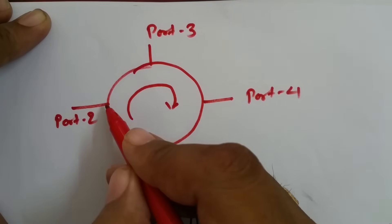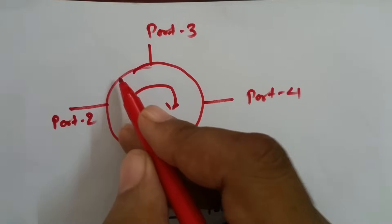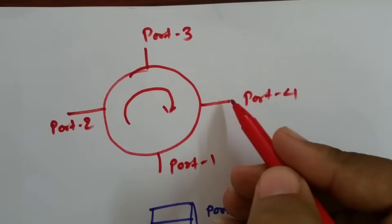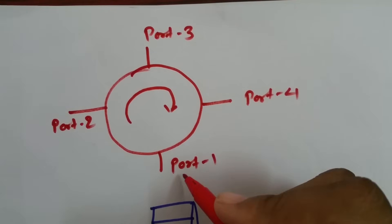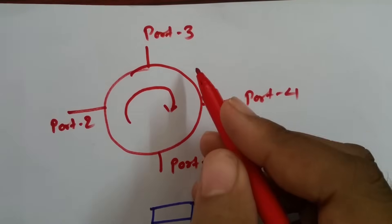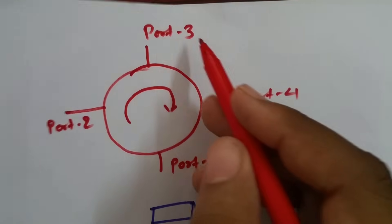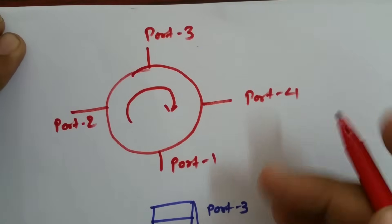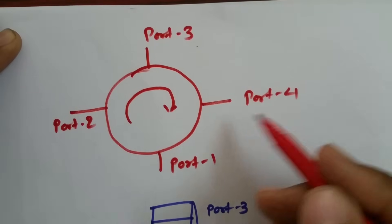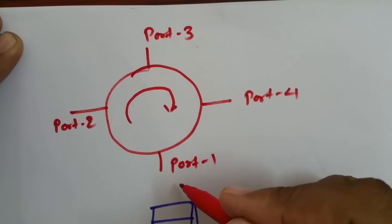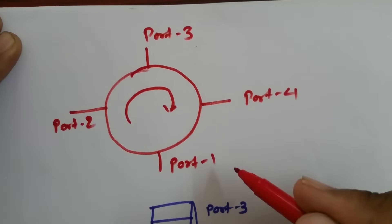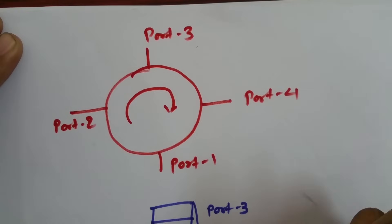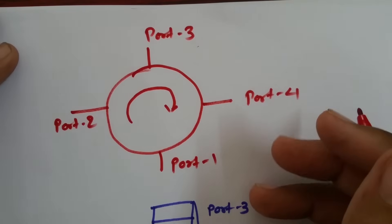If we give input to port 2, output will circulate to port 3, and output at port 4 and port 1 will be zero. Similarly, for port 3 input, output will be at port 4, and output at port 1 and port 2 will be zero. So that is how this complete device functions.